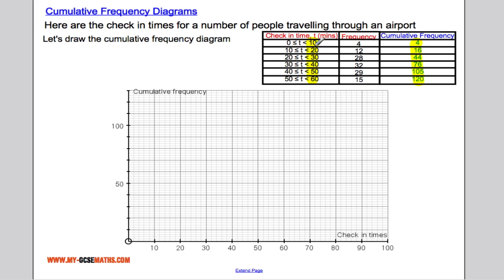If we go to the first one, at 10 minutes we should have a cumulative frequency of 4. So going to 10 minutes, I'm going to go up as far as 4, which is just there. Put a little mark. At 20 minutes we had 16. At 30 minutes we had 44.